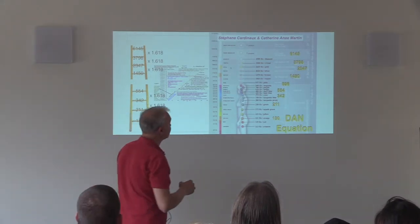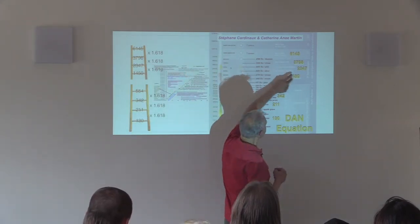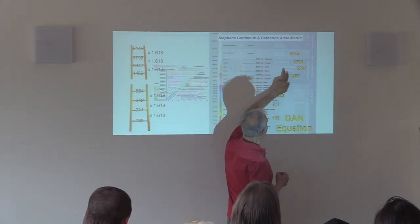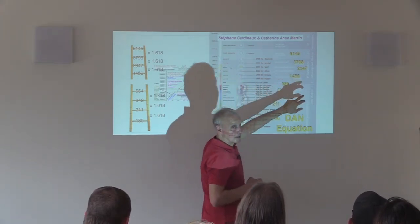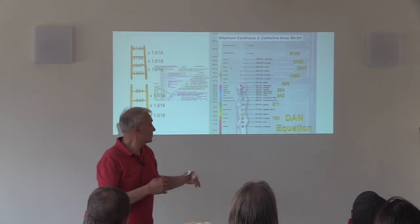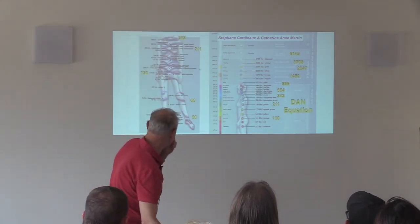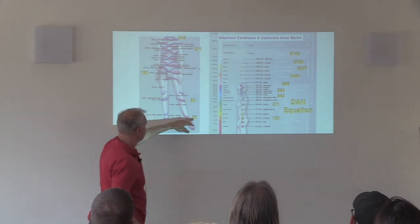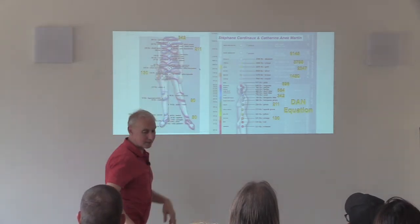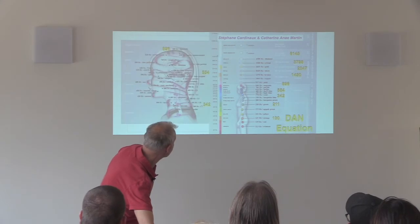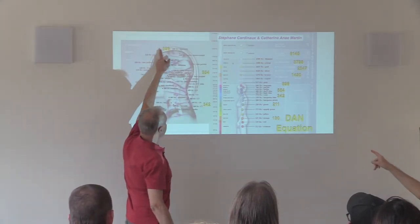What is very interesting is that this frequency from Dan is just between the sacred masculine and sacred feminine. This is the map that Stéphane and Catherine made — even in the lower part: 50, 80, 130, and in the top part of the body. Tchaikovsky, Priory, Rife — when they found the right frequency, they all landed right there.